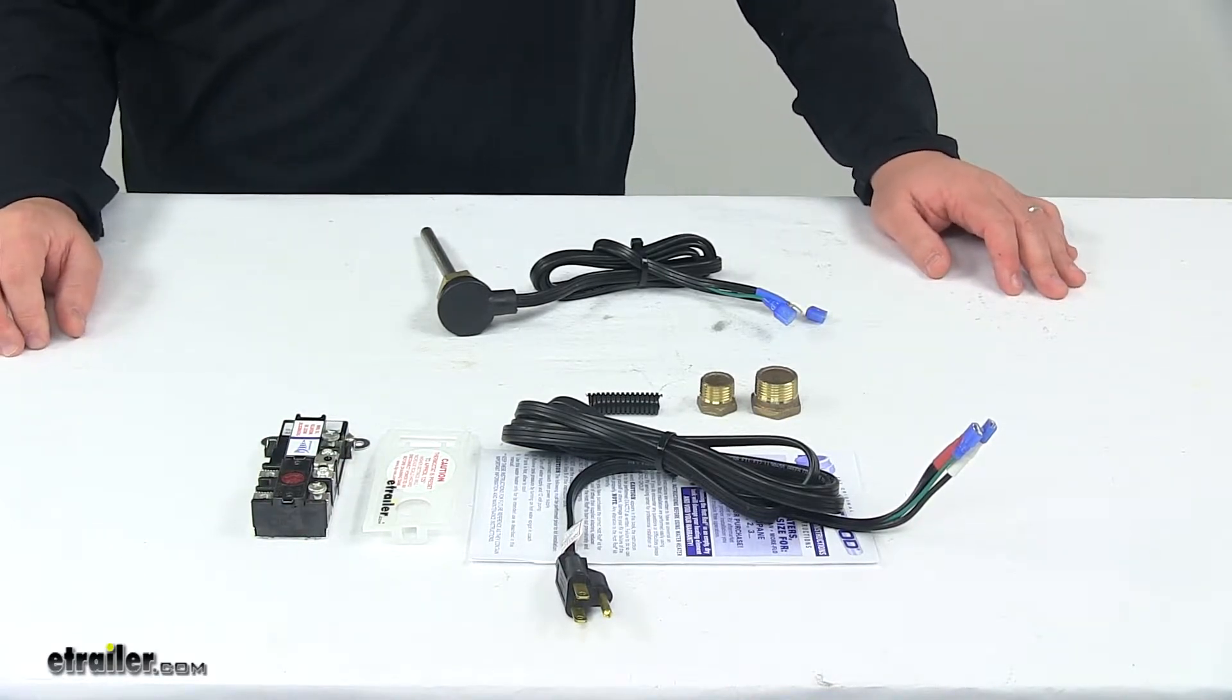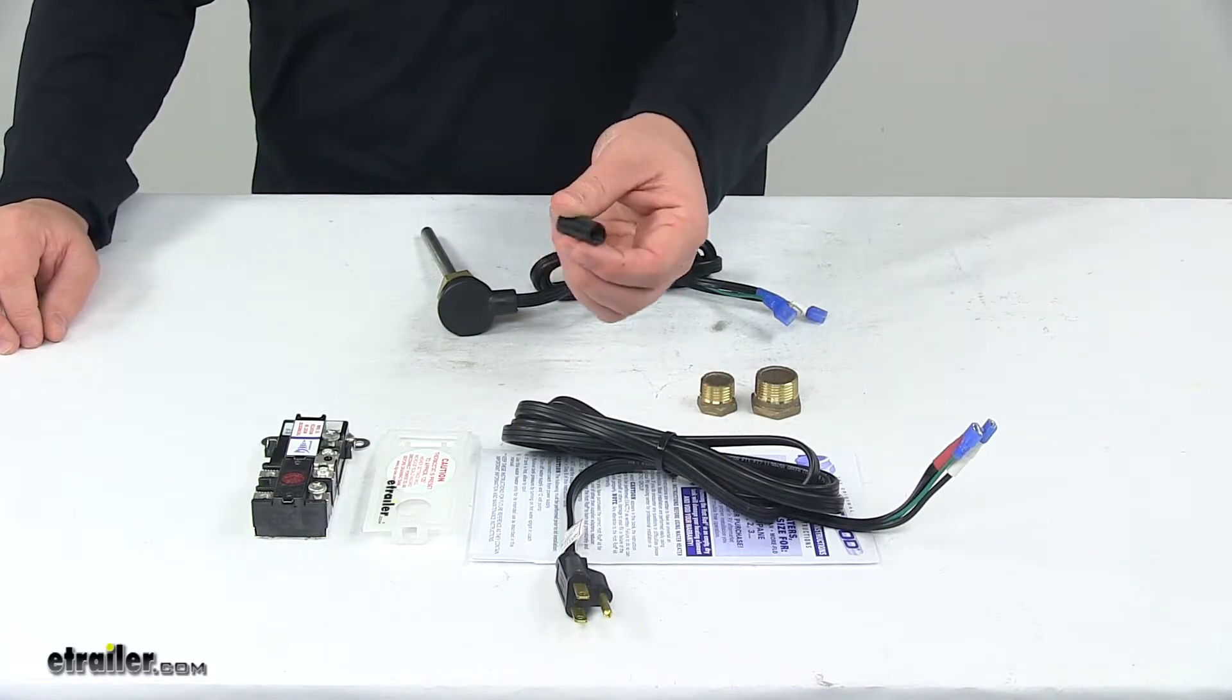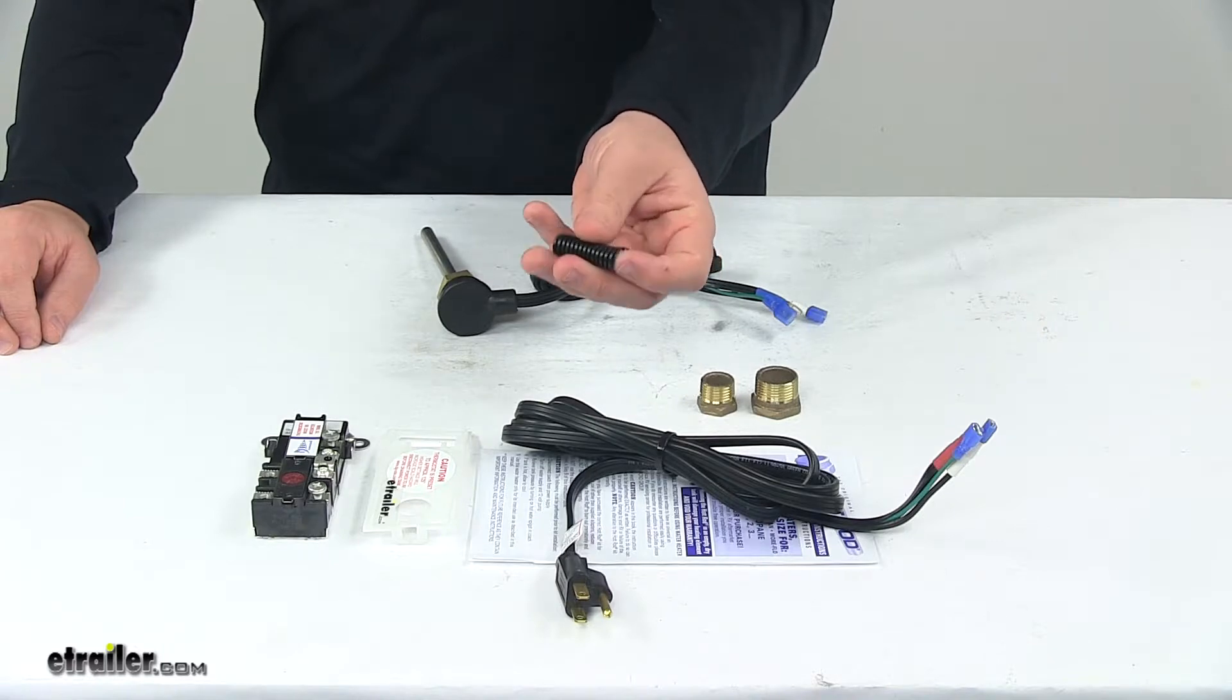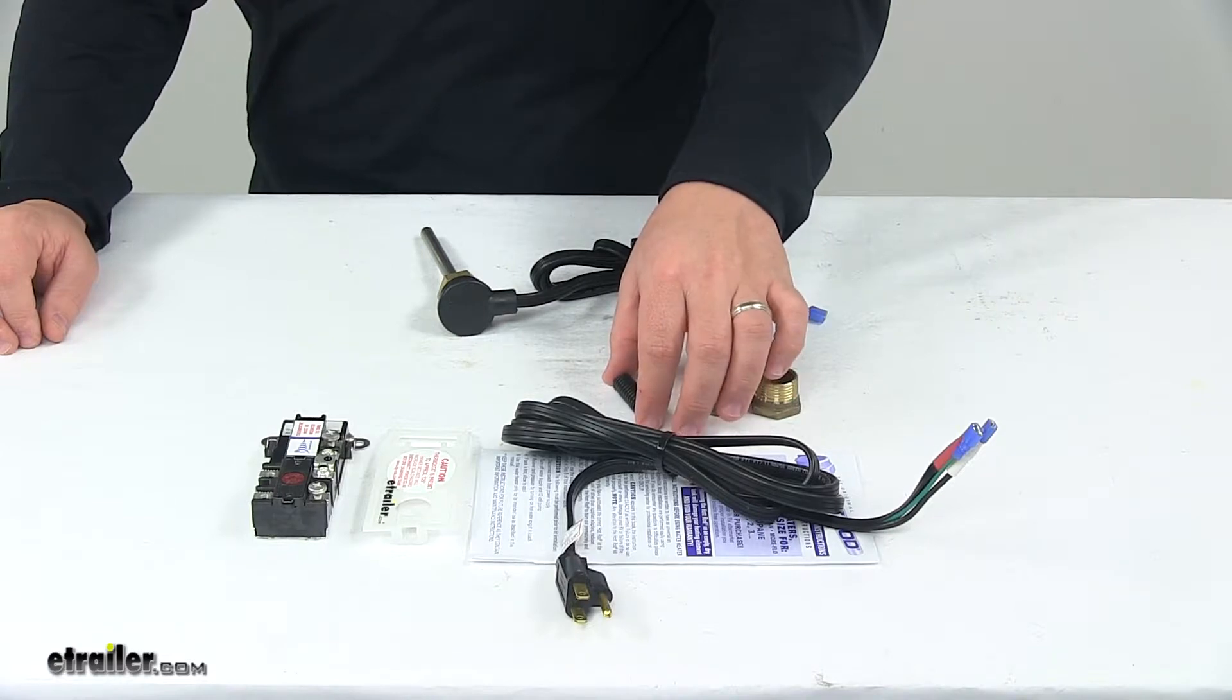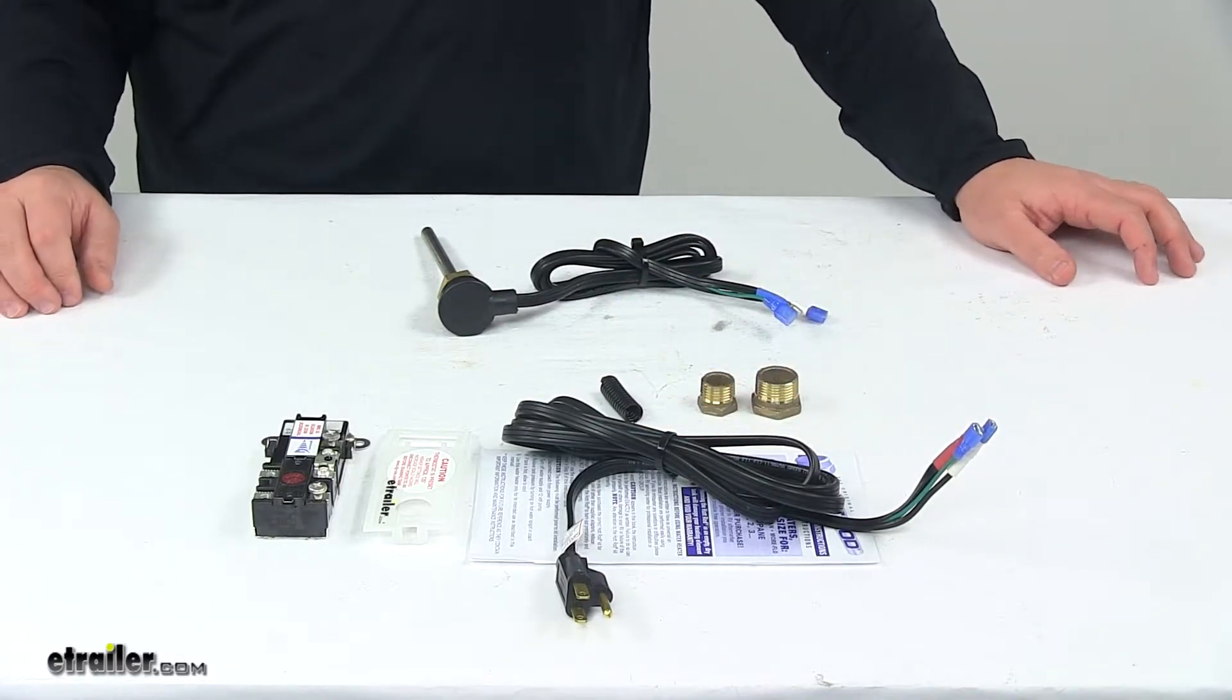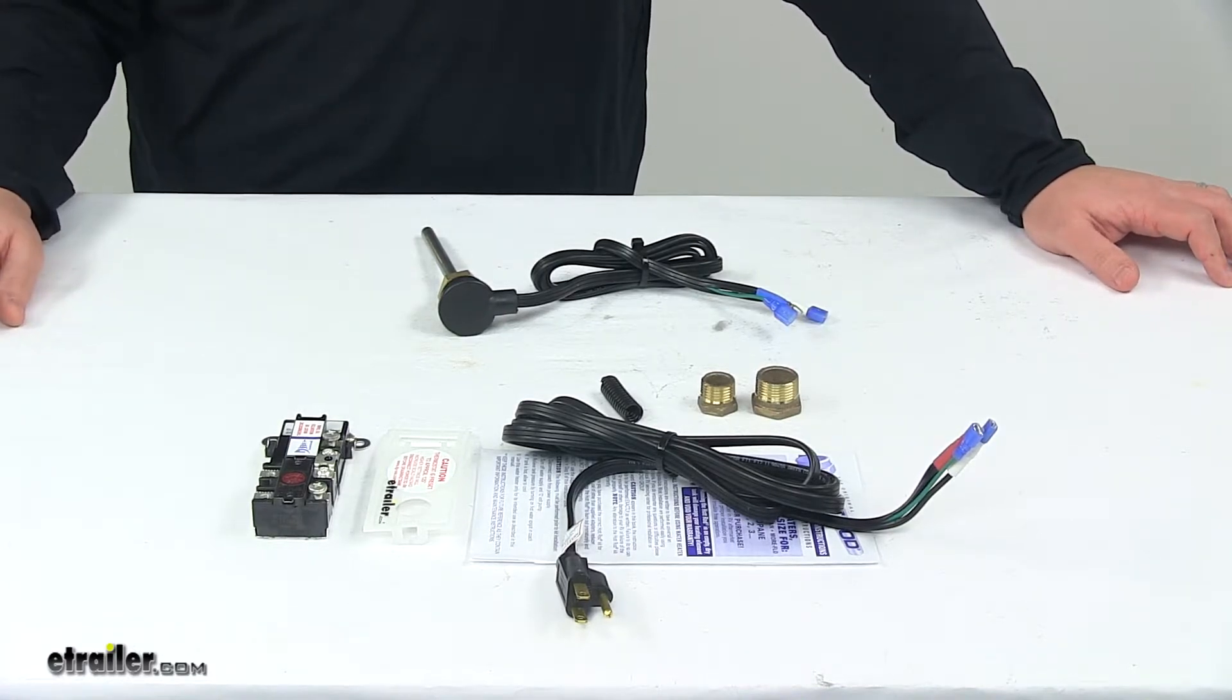You will need to drill a hole to route the heater cord, so the product kit does come with split wire loom to protect the heater cord from contacting the drilled hole surface. I also recommend using some silicone to seal any gaps and to make things airtight from outside vapors. Silicone's not included, so if you need some, you can check out options here at eTrailer.com.